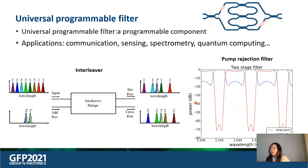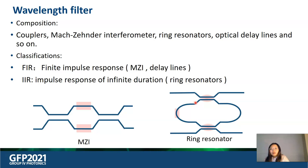spectrometry and quantum computing. We will focus on two applications of our programmable filter, optical interleaver and pump rejection filter. When implemented as a waveguide circuit or optical filter, it is composed with couplers, Mach-Zehnder interferometers, ring resonators. These components are used to manipulate light to have constructive or destructive interference at certain wavelengths,